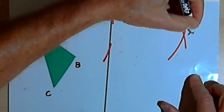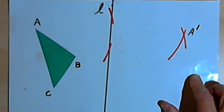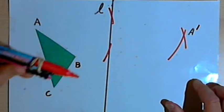So that's going to be point A prime. And now I've just got to repeat that process for points B and C.